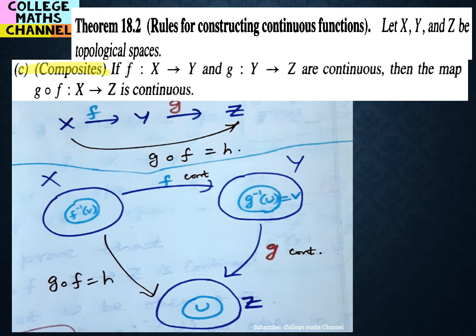Here is what we say. Composition means two functions are combined, and we say the new function is continuous. First, function f from X to Y is continuous, and g from Y to Z is continuous — two functions are continuous. When those two functions are combined, the function g-composite-f from X to Z is also continuous.